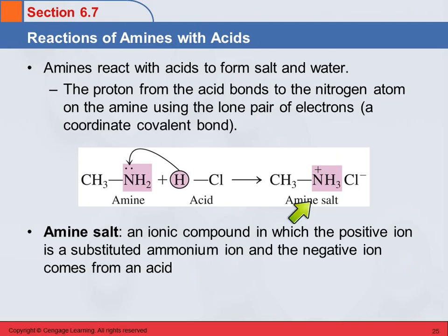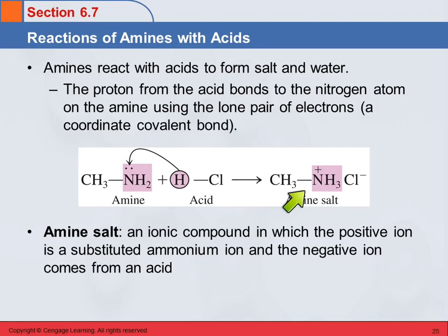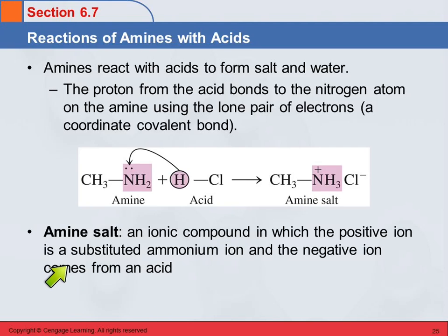This has a positive charge, and that has a negative charge. This would be the methyl ammonium ion. So we end up with an amine salt — the cation is a substituted ammonium ion, and the negative ion comes from the acid.